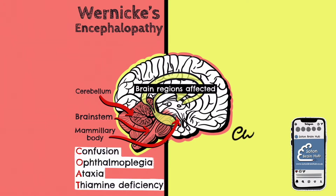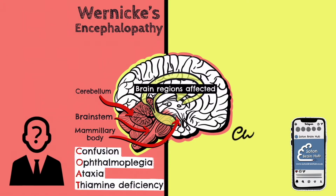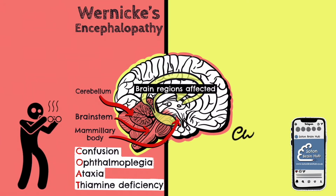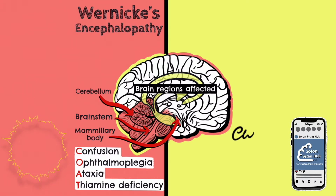Confusion is one of the first symptoms of Wernicke's syndrome, along with ophthalmoplegia. Remember that ophthalmoplegia refers to weakness or paralysis of one or more of the extraocular muscles.